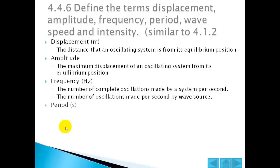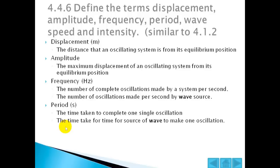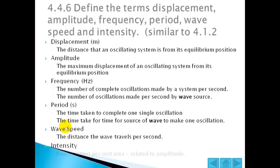Period is the time taken to complete one single oscillation, or the time taken for the source of the wave to make one oscillation. The wave speed is the distance the wave travels per second. The intensity is the power output per unit area of the wave, and it's related to the amplitude — actually, the amplitude squared.